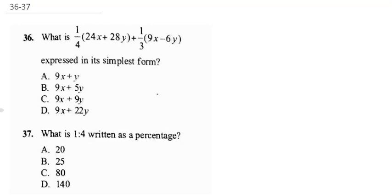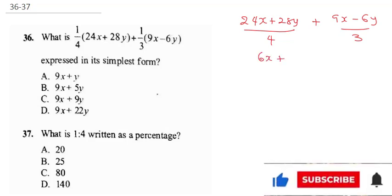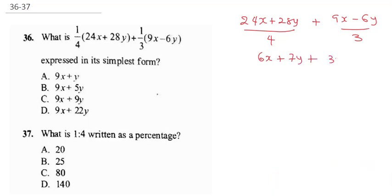This question asks what is expressed in simplest form. One way to write this would be 24x plus 28y all divided by 4, plus 9x minus 6y all divided by 3. This would be 4 into 24, giving 6x, and 4 into 28 gives 7y. Here, 3 into 9x gives 3x, and 3 into 6y gives 2y. Collecting like terms, you have 6x plus 3x plus 9x equals 9x, wait that's not right - 6x plus 3x is 9x, and 7y minus 2y is 5y. The correct answer is B.